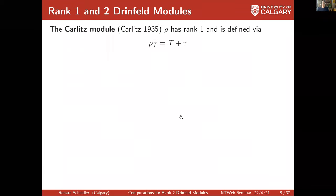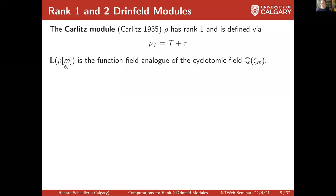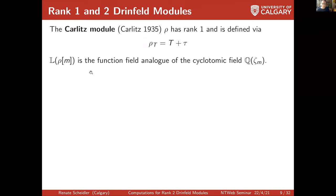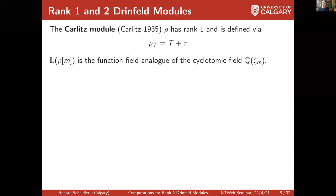The rank one Drinfeld module: there's only — up to isomorphism — one rank one Drinfeld module, and it was actually proposed by Carlitz in 1935, long before Drinfeld introduced Drinfeld modules. If you join the M-torsion, you get a Galois extension with Galois group (A/MA)^*, while for cyclotomic fields it's (Z/mZ)^*. These are the analogs of cyclotomic fields — they behave exactly like cyclotomic fields with a similar Galois group.